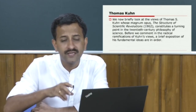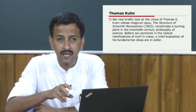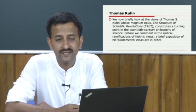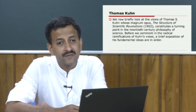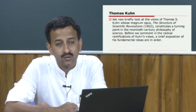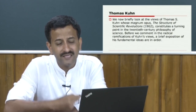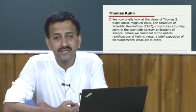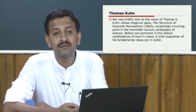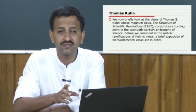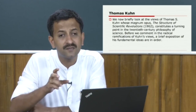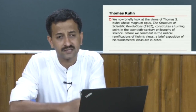From there onward, we started a detailed discussion on Mertonian institutional imperatives in the form of the Mertonian ethos of science — the ethos of modern science, meaning effectively a complex of values and norms which is held to be binding on the man of science. These norms are expressed in terms of prescriptions, preferences and permissions.